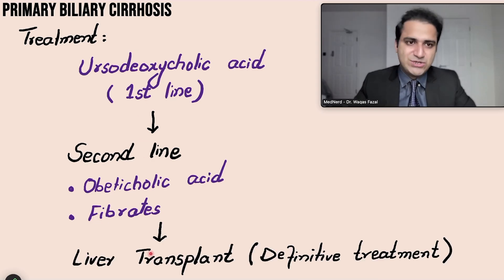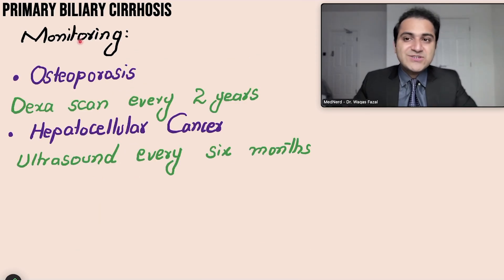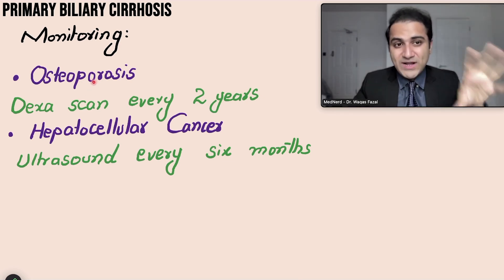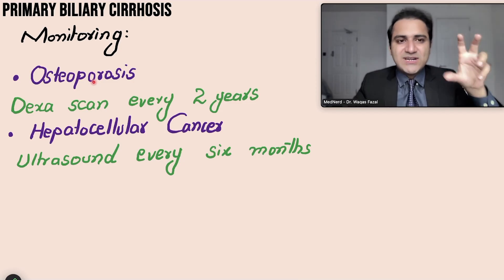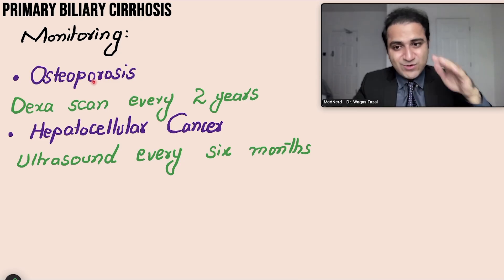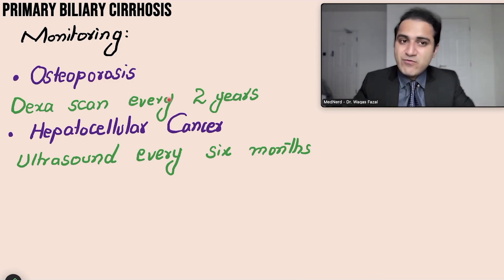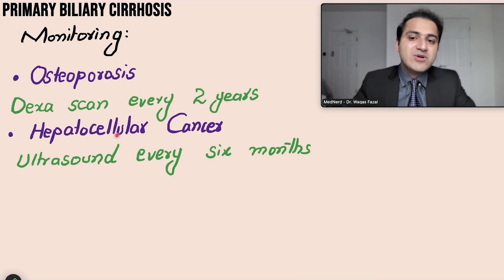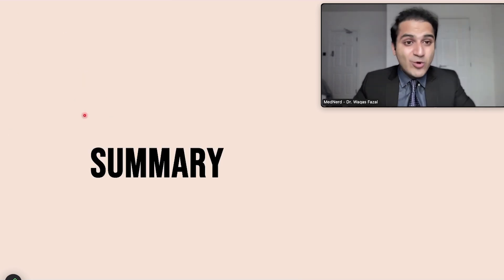Monitoring is important in patients with primary biliary cirrhosis. They are at risk of osteoporosis because bile is required for absorption of fat-soluble vitamins; when bile is absent, vitamins A, D, E, and K become deficient, and vitamin D deficiency leads to osteoporosis — a DEXA scan should be performed every two years. These patients also need screening for hepatocellular carcinoma with ultrasound every six months and alpha-fetoprotein levels.